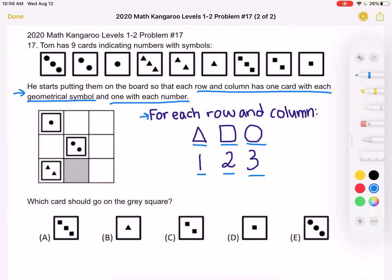So we'll have one of one shape, two of another shape, and three of the other shape for each row and column.